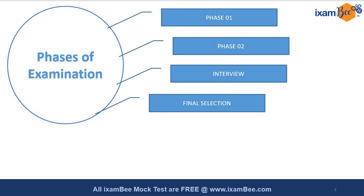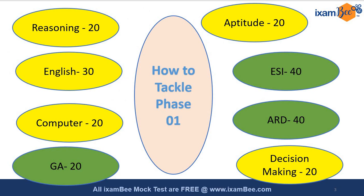This exam consists of three phases: phase one, phase two, interview, and the final selection. These three phases are totally different from each other — the kind of knowledge being tested has no overlapping. Now phase one: if you look at what it constitutes, you will see there are eight sections. I don't remember any exam having this kind of variety even in phase one. Two color codings have been done — one yellow and one green.